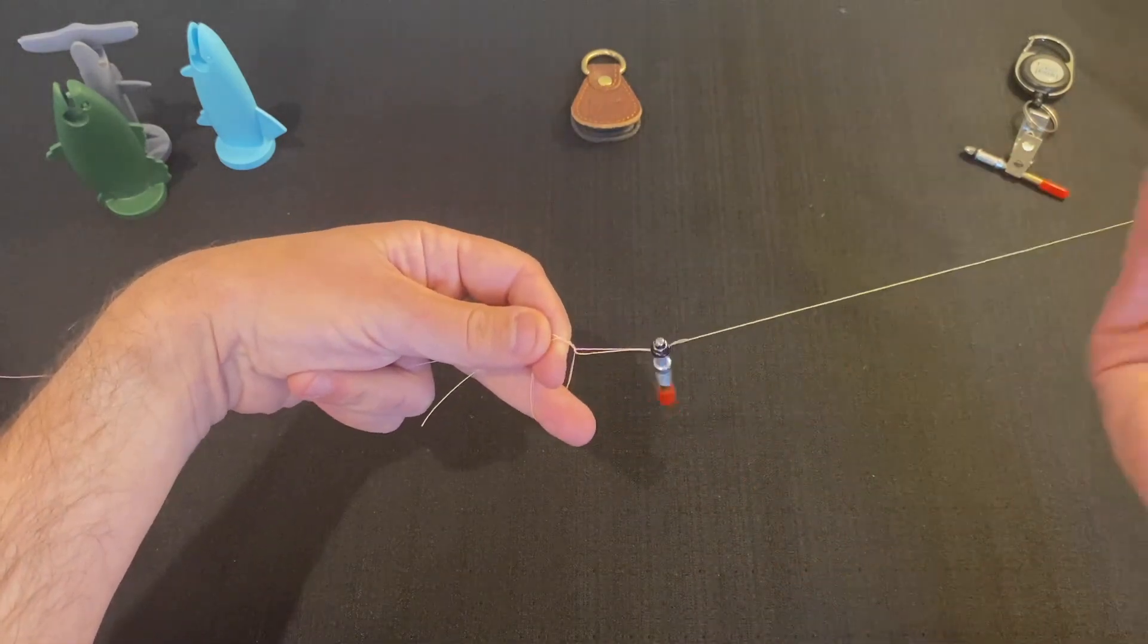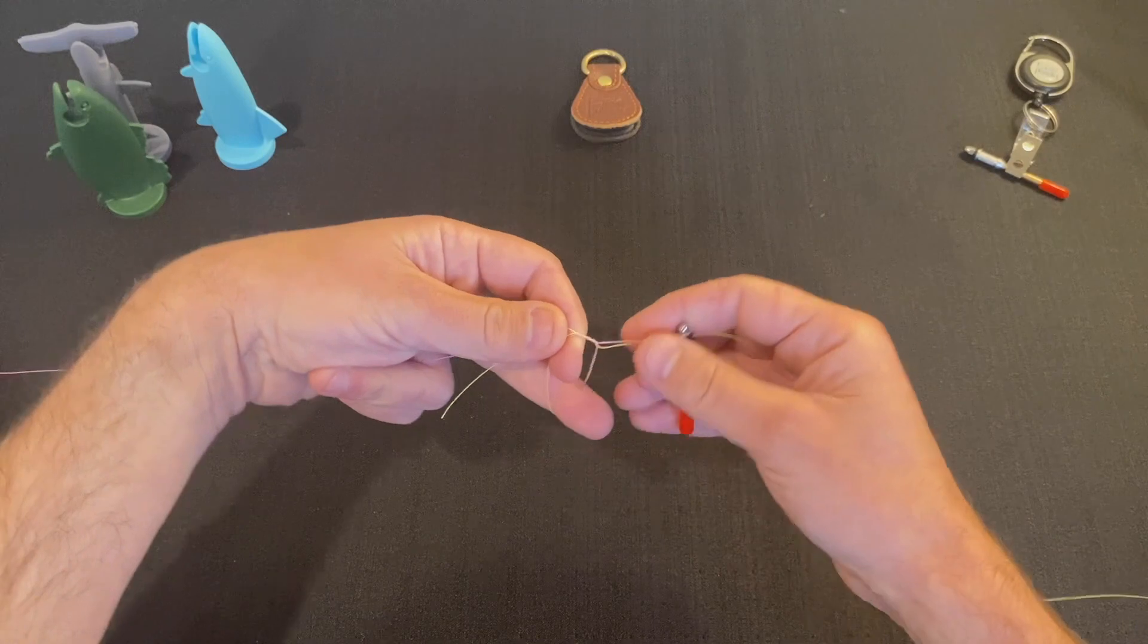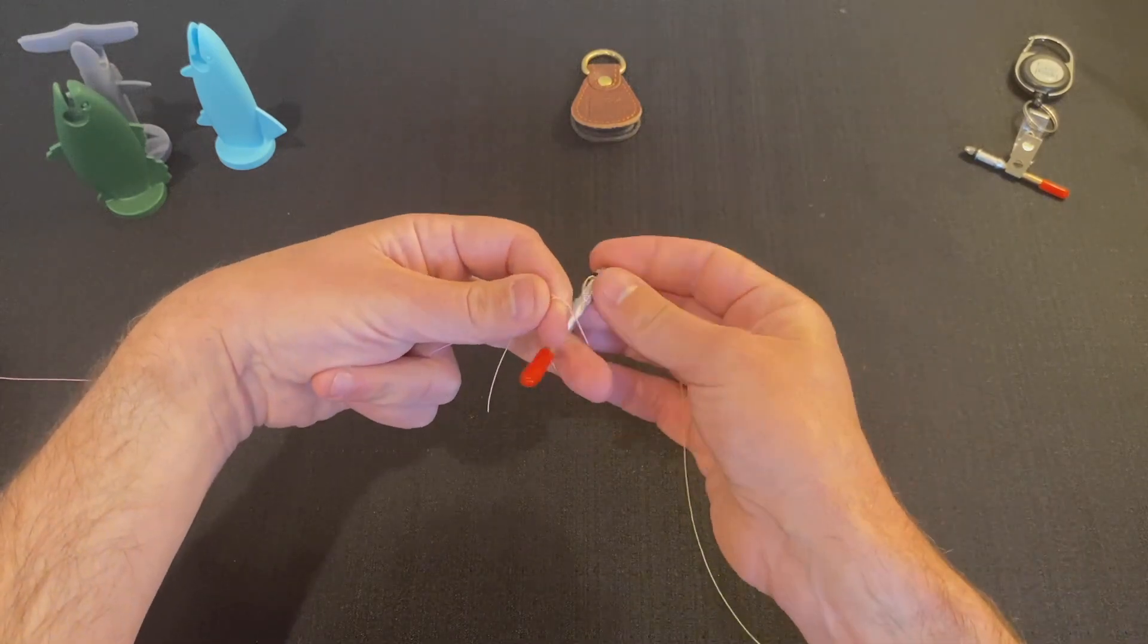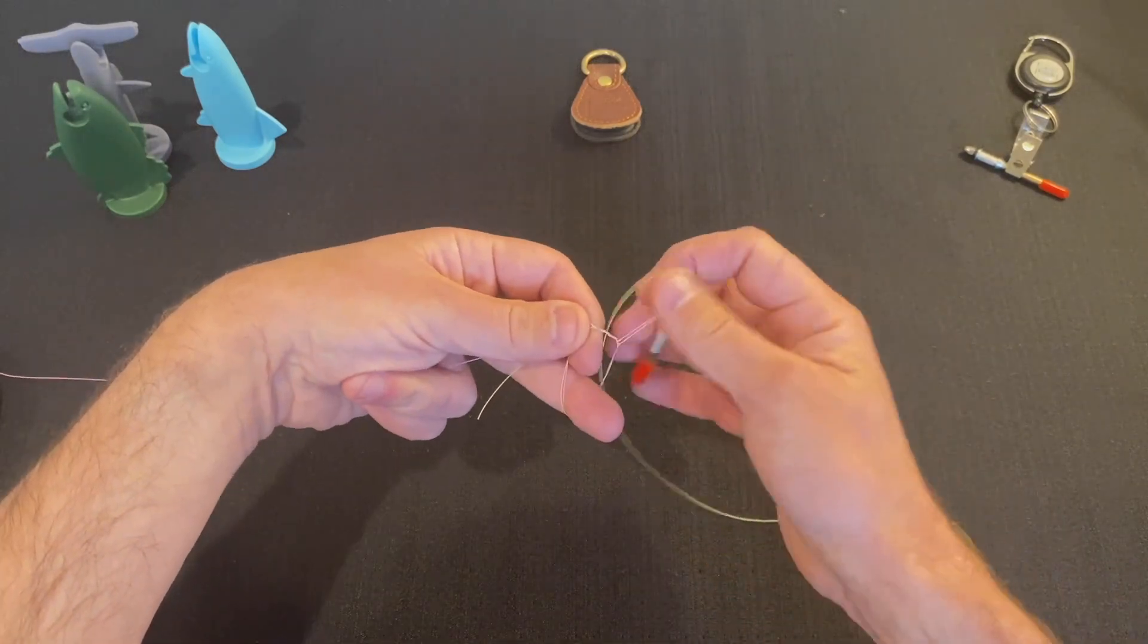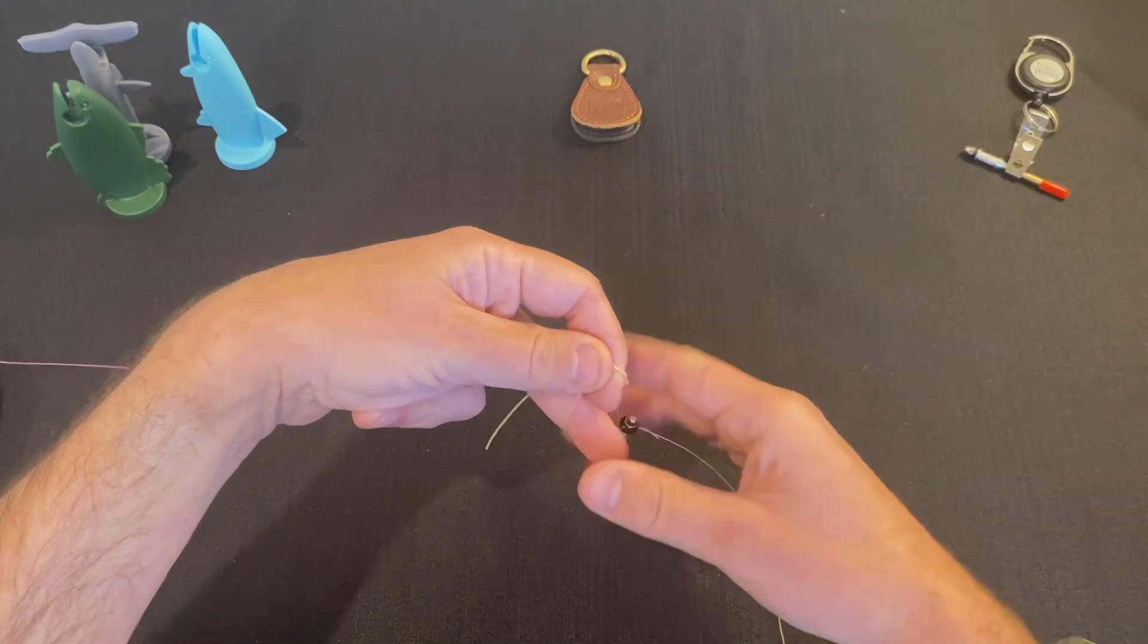That's the second overhand pass, and that's going to be my double surgeon's knot. Then one more for a triple. I personally like the triple. A lot of people use the double.